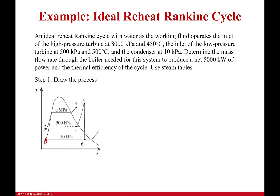You're usually trying to find the enthalpy at every single point, and you're using the information given to do that. In this problem it gives us pressures. The highest pressure is 8,000 kilopascals, then a mid-pressure of 500 kilopascals, and finally the condenser is operating at 10 kilopascals. That gives me these three lines.